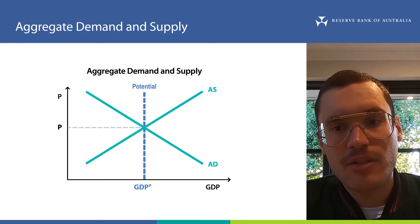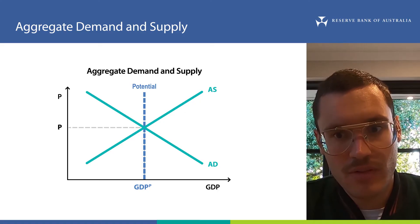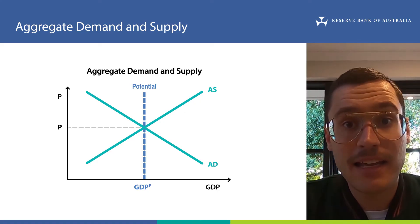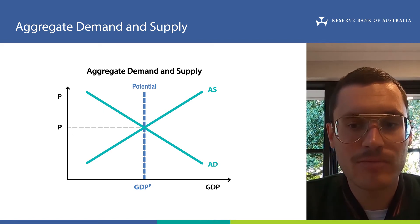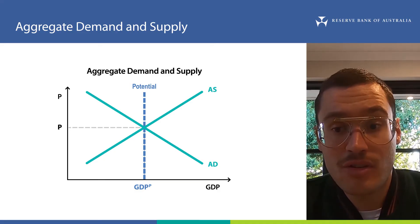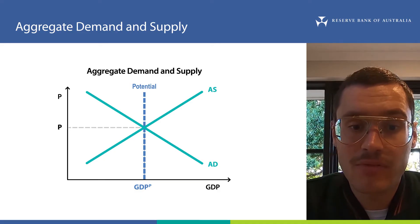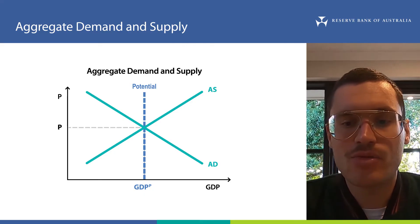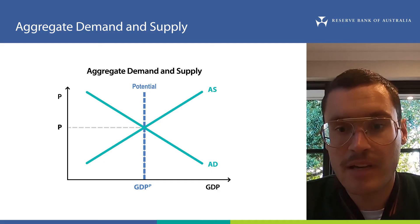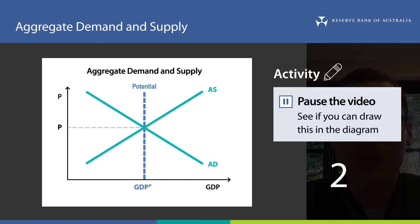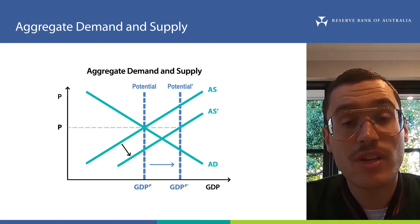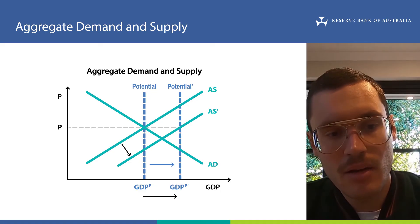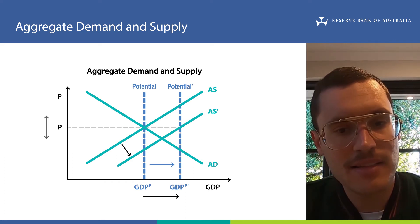But what if aggregate supply were to increase permanently so that a higher amount of goods and services could be supplied when labour and capital inputs are fully utilised? This could occur if more labour or capital become available — say because the population grows or there is investment in new capital — or if productivity improves. This would increase the level of potential GDP for a given price level. The aggregate supply curve and the vertical dashed line would shift to the right, and the level of potential GDP would increase such that the price level remains the same.